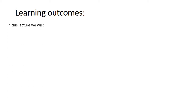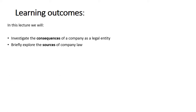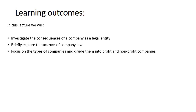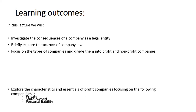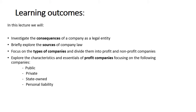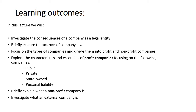In this lecture we will investigate the consequences of a company as a legal entity and briefly explore the sources of company law. We will focus on the types of companies and divide them into profit and nonprofit companies, and then focus on the characteristics and essentials of profit companies — specifically public, private, state-owned and personal liability companies. We will also explain briefly what a nonprofit company is and investigate what an external company is.